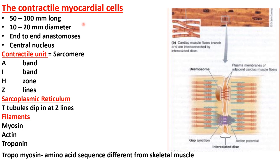The contractile myocardial cells are 50 to 100 micrometers long and their diameter is 10 to 20 micrometers. They have end-to-end anastomosis, and the nucleus is centrally arranged in the cardiac muscle fiber.